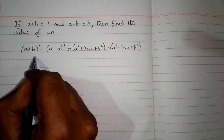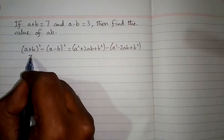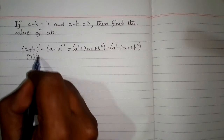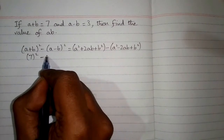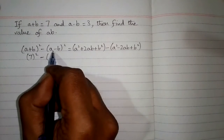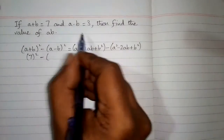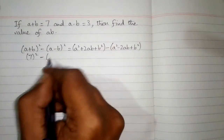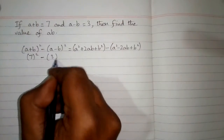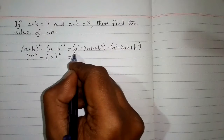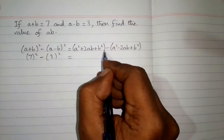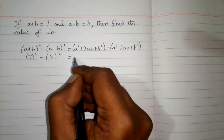Now the value of a plus b is 7, so we put 7 in place of a plus b, and then minus sign. And in place of a minus b we put 3, so we have 3 square.